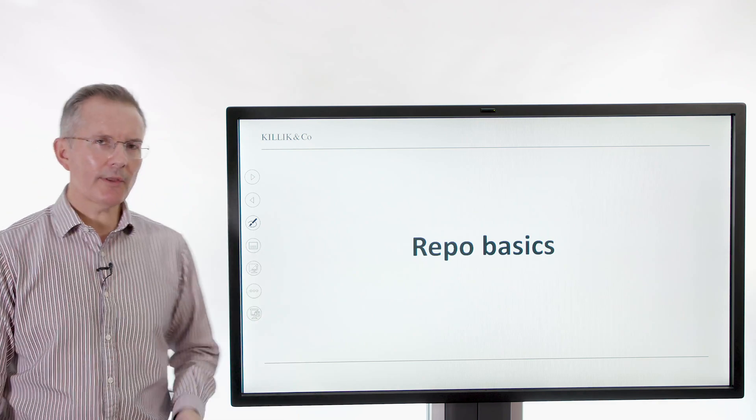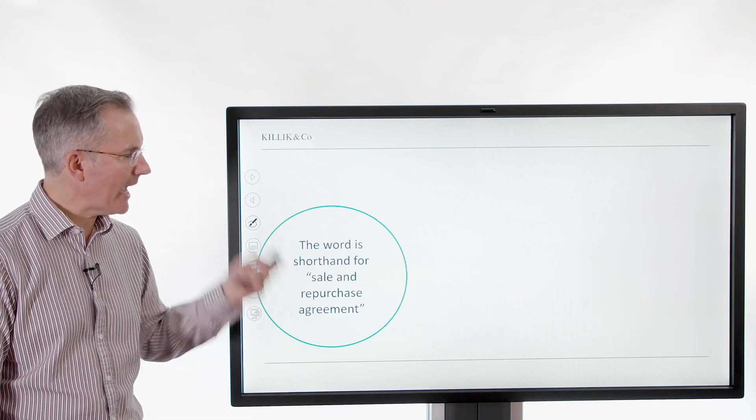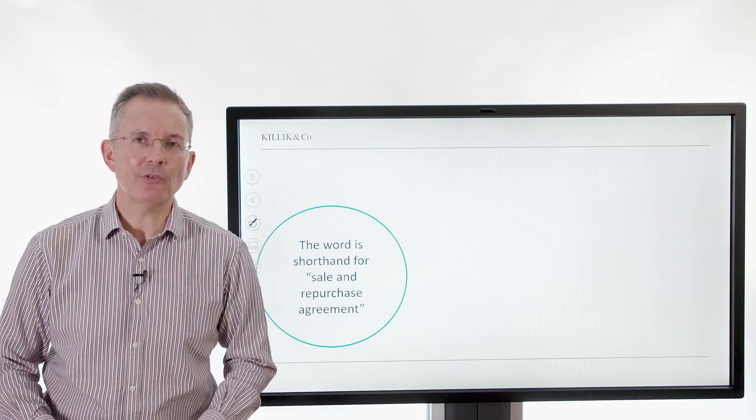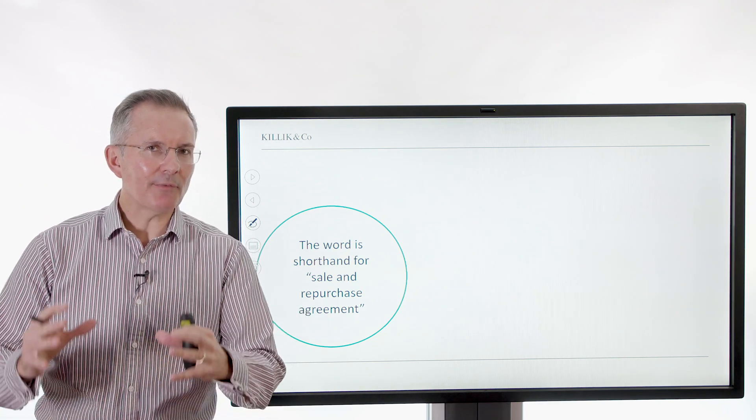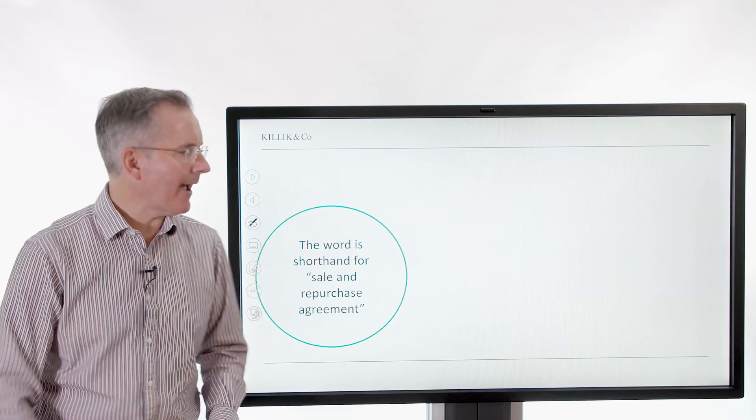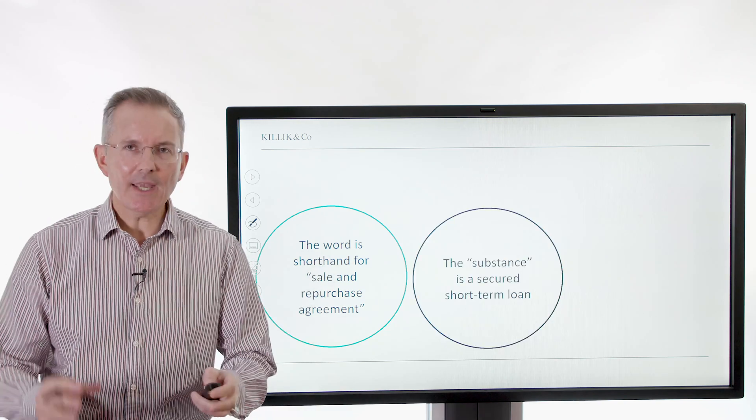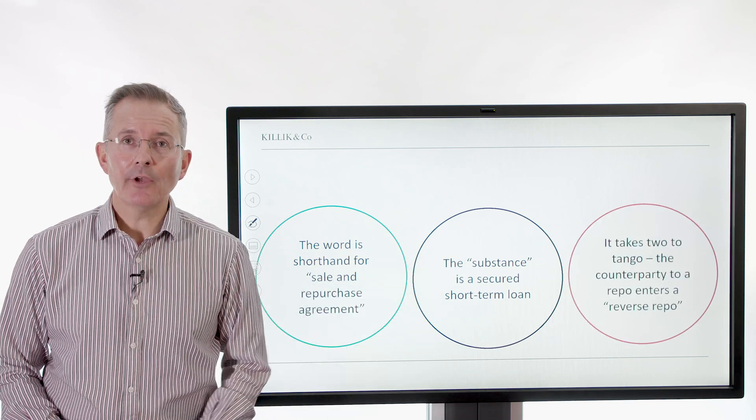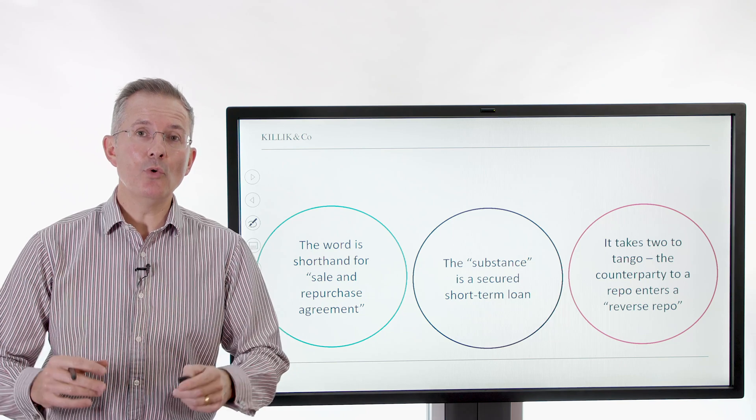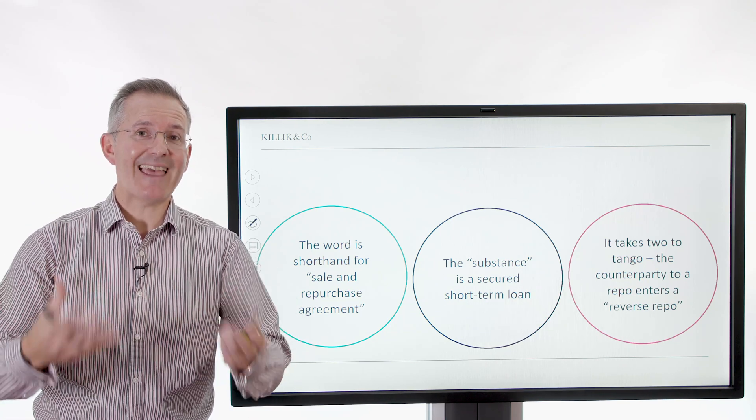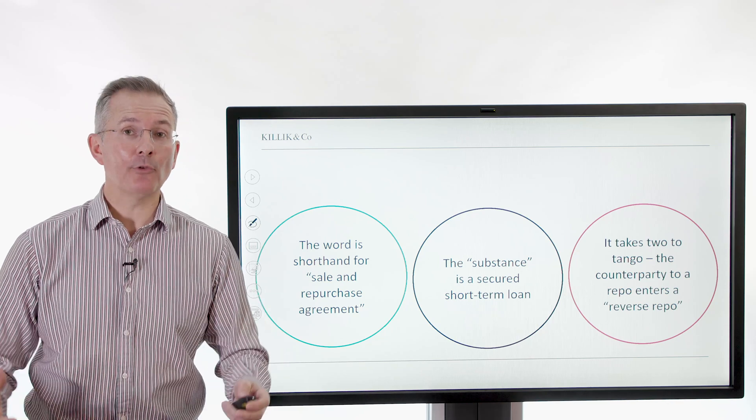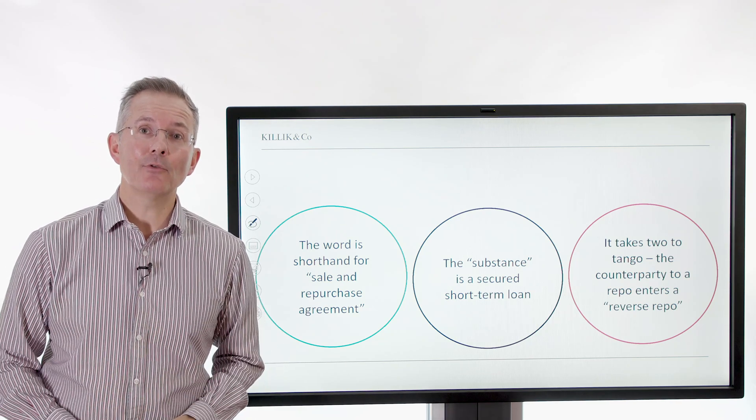So repo basics, what do these things look like? In essence, we have a sale and repurchase agreement. So the repo is the repurchase bit shortened, if you like. But to call it a sale and repurchase agreement is to ignore the fact that really what this represents is a secured short-term loan. And that means there are two parties. There are basically two transactions involved, a sale and repurchase, two parties, one doing a repo and the other, I suppose not surprisingly, doing a reverse repo.